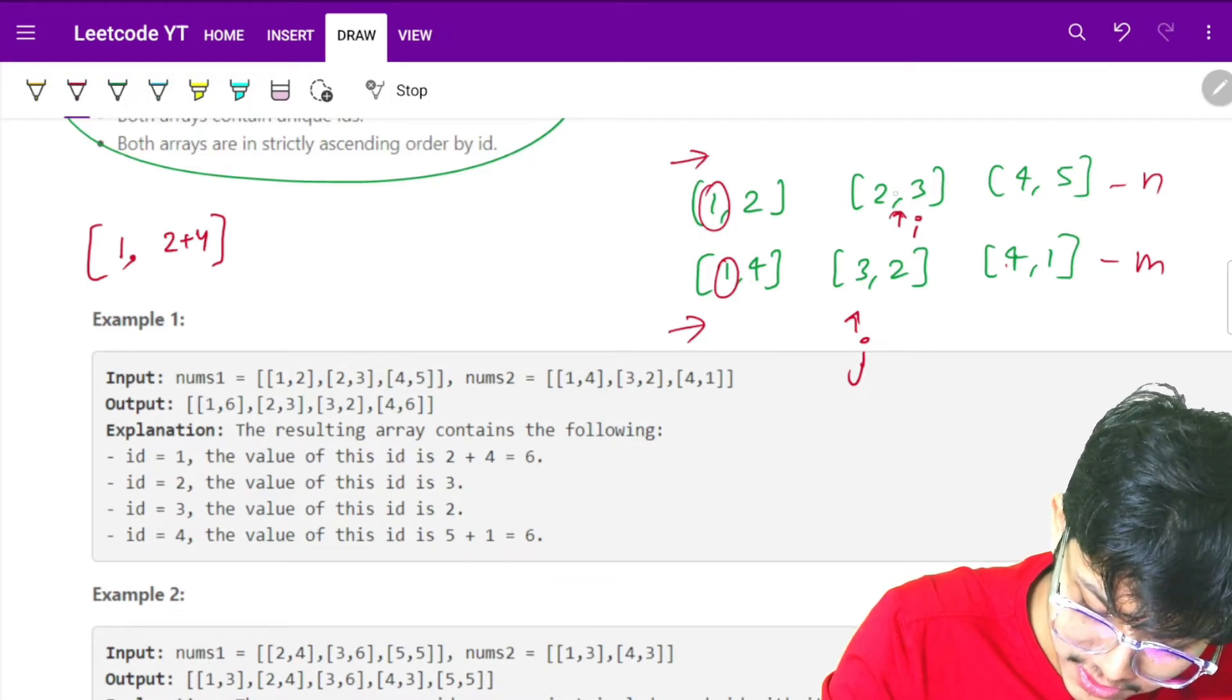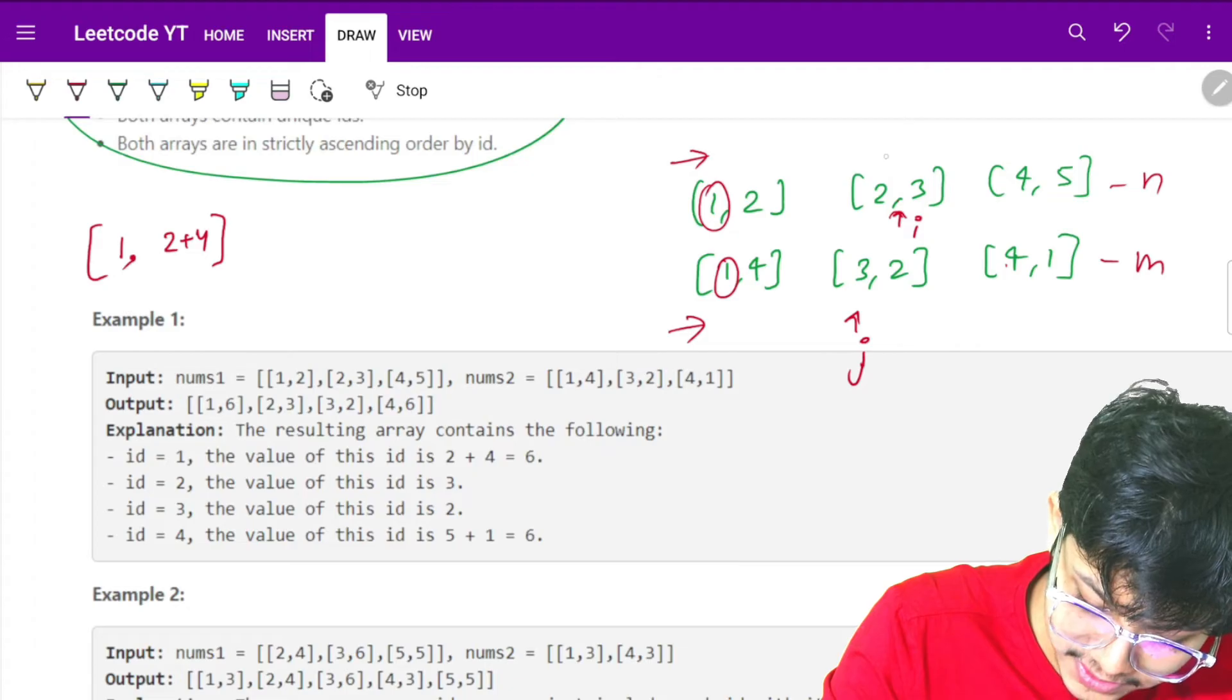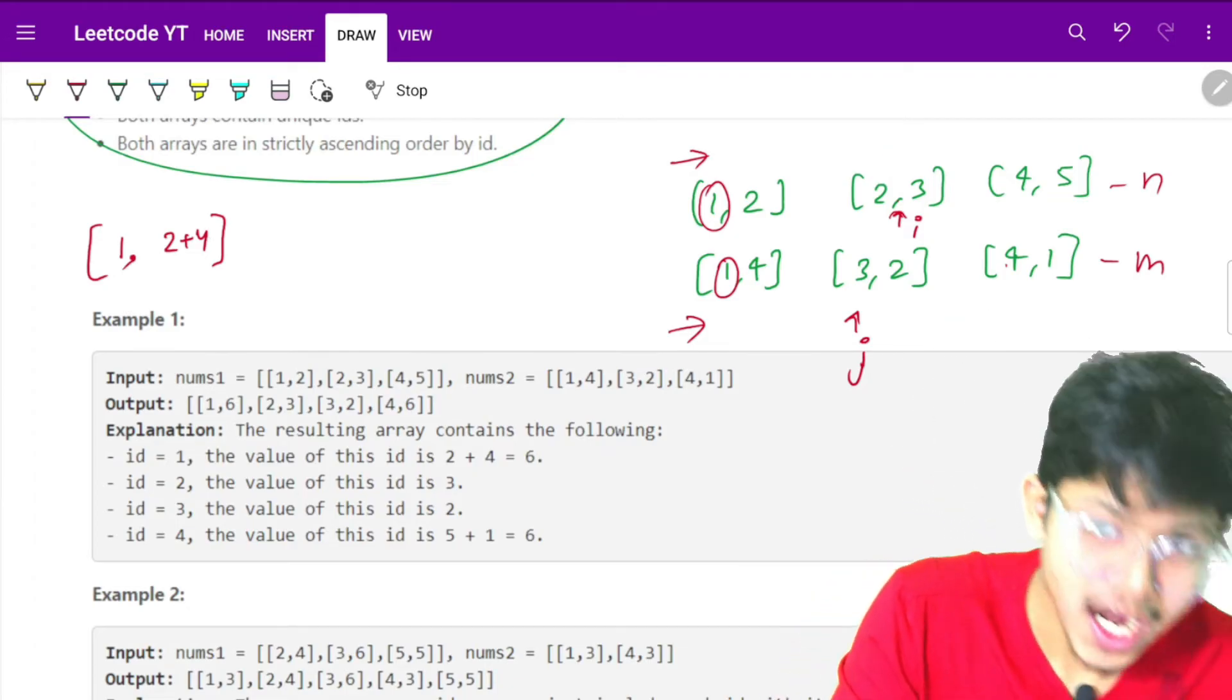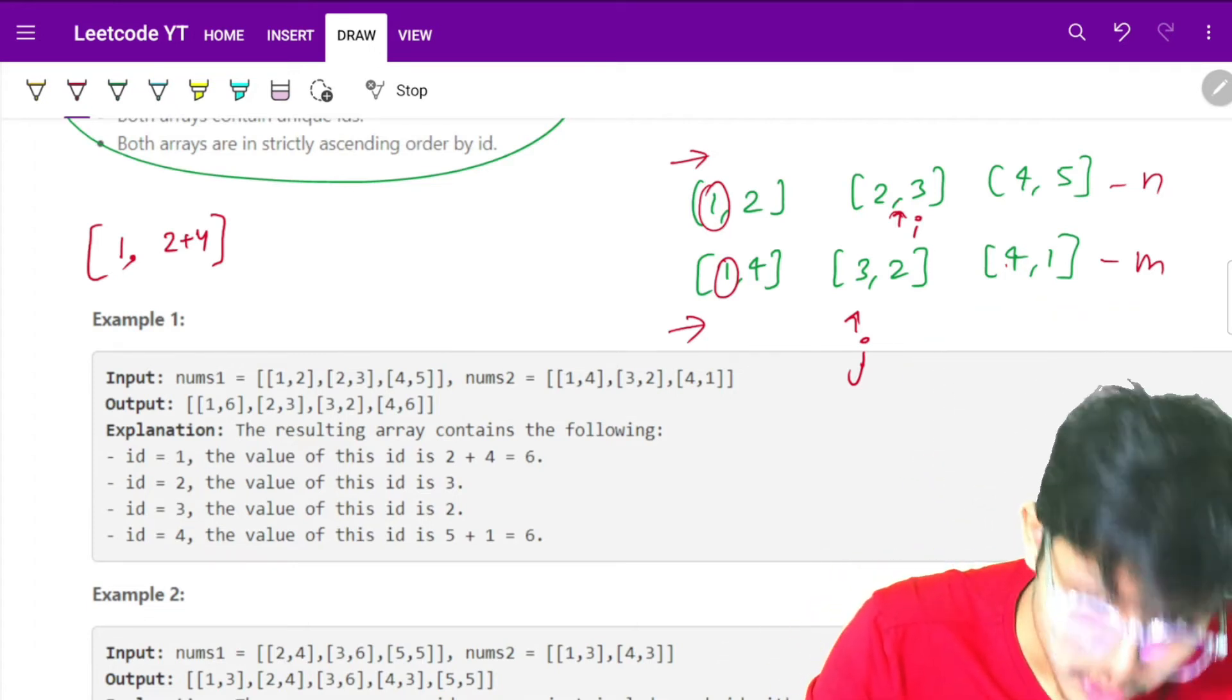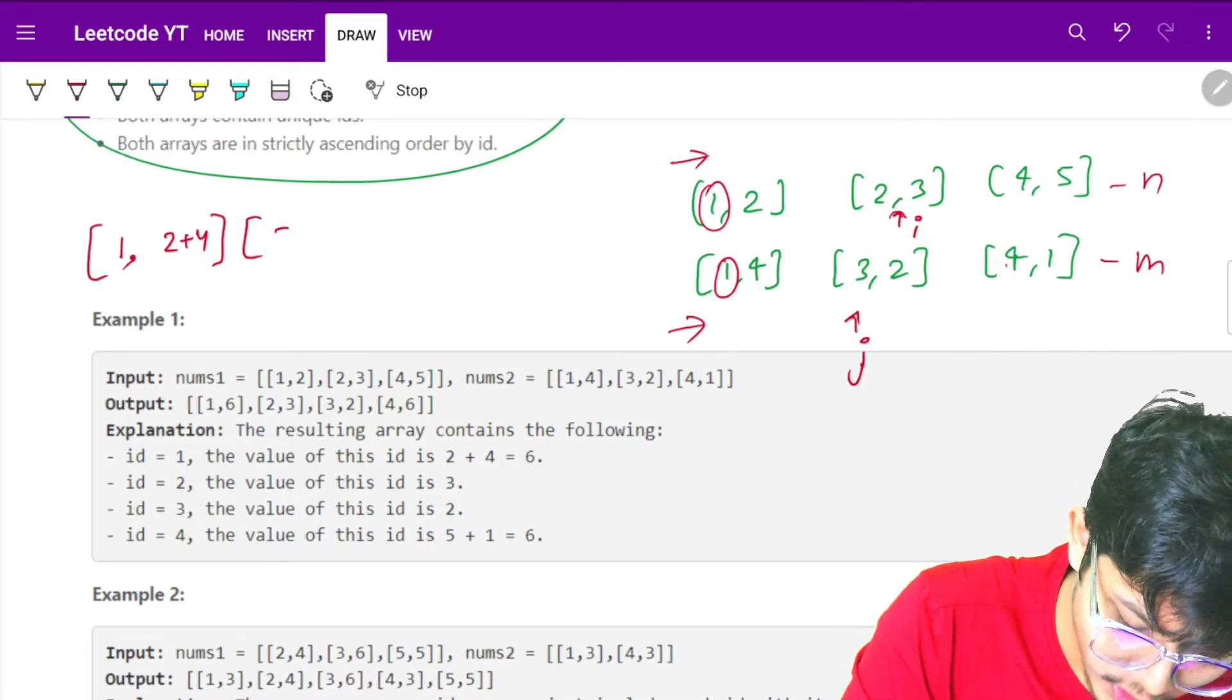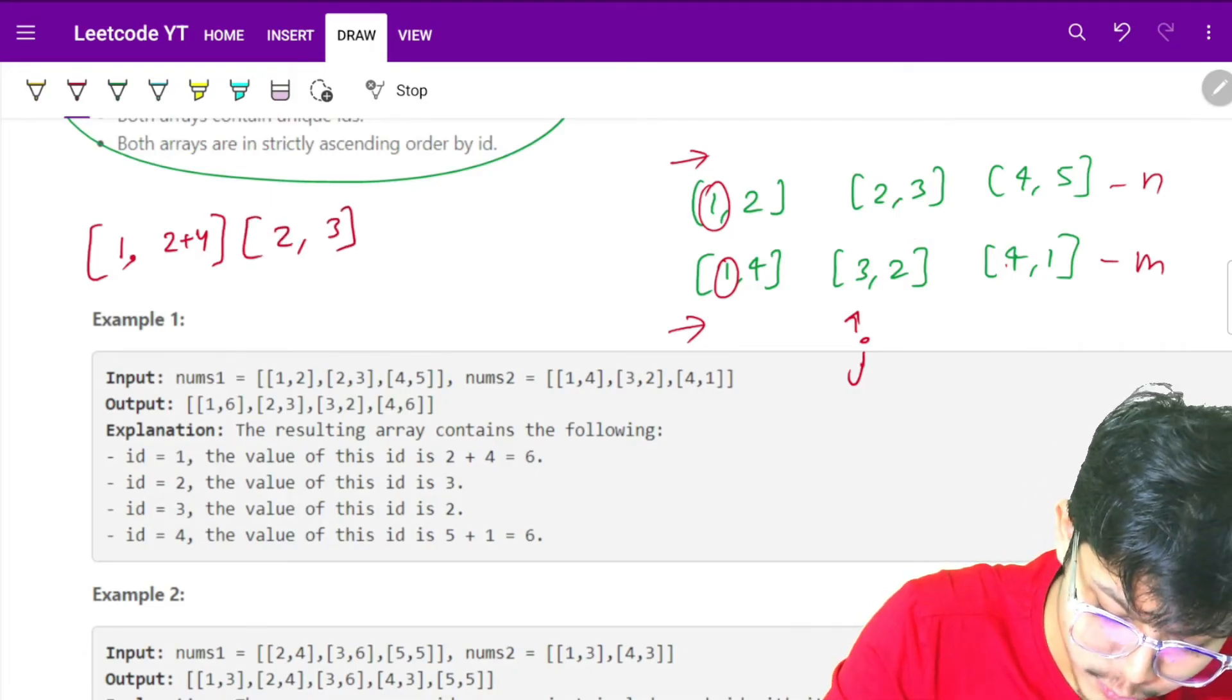Now I will see which is less, i or j. If i is less and they're not equal, I can't add both values. If i is less, I just need to add i here and move my i ahead.